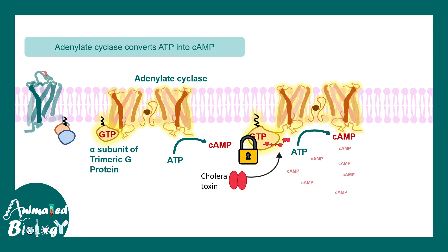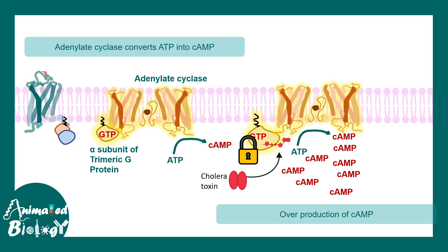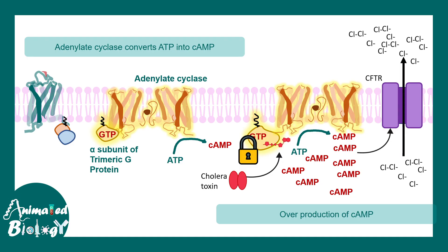This produces a large amount of cyclic AMP. Cyclic AMP can bind to specific cyclic AMP-gated channels — one such channel is CFTR, which is a chloride channel. It allows chloride ions to leak out into the intestinal lumen, and water follows to maintain osmolar balance. This results in a massive loss of water through the intestine.